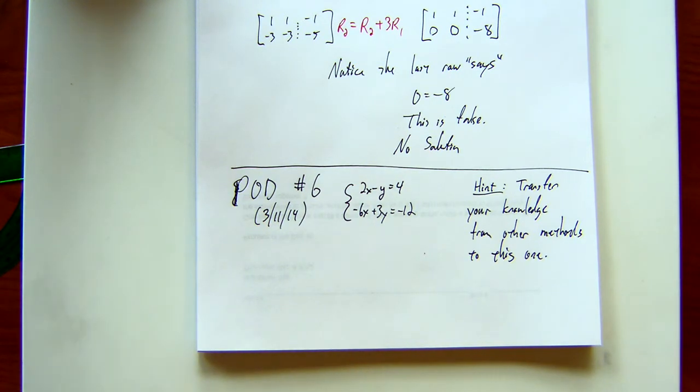Yep? I'm sorry? Yes, use Gauss-Jordan. So you have to write in the matrix form, do some row operations, and when you get an answer, let me know.